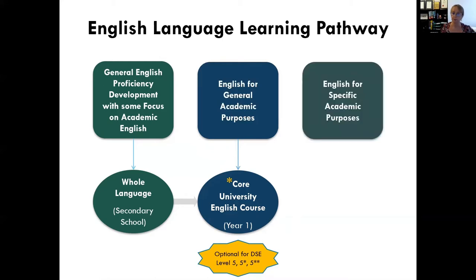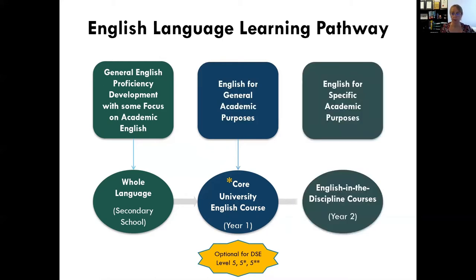After you do that year one course, you'll take a year two course and this is compulsory for all students. This is a course that will help you develop your English academic skills specifically for your courses in the Faculty of Arts.